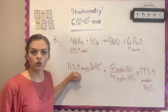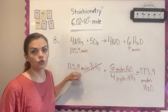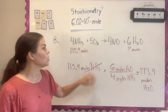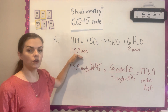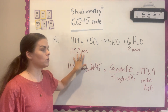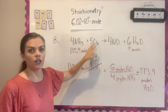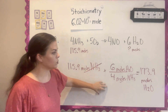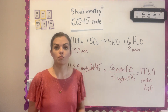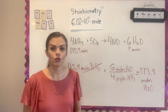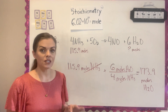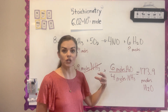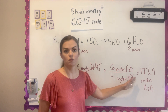Since we started with 4 significant figures, we keep 4 significant figures in our answer. So starting with 115.9 moles of ammonia burned in excess oxygen, you would produce 173.9 moles of water. The phase is gas because you're burning something, so this would be steam.